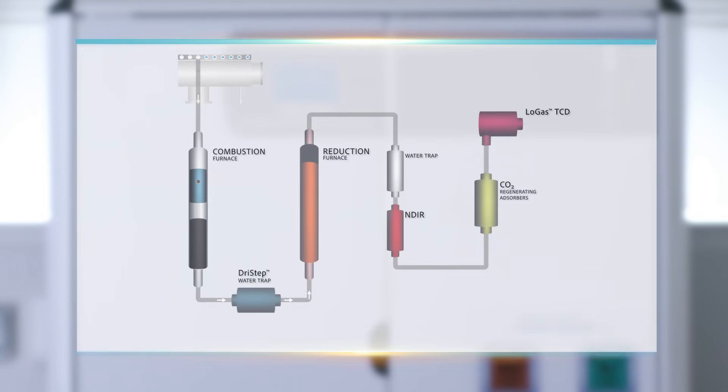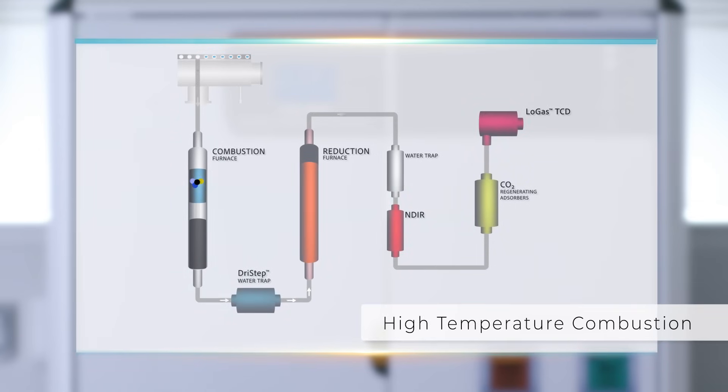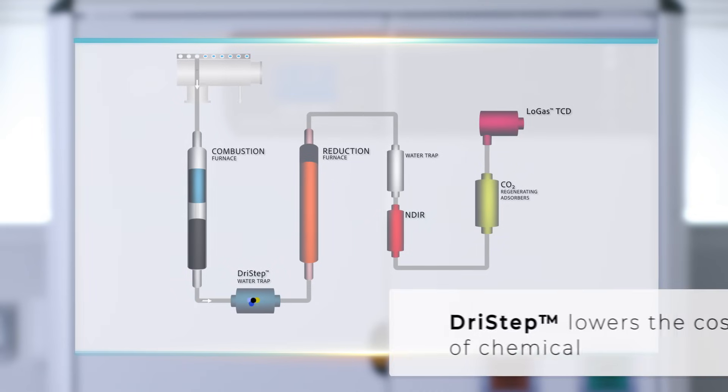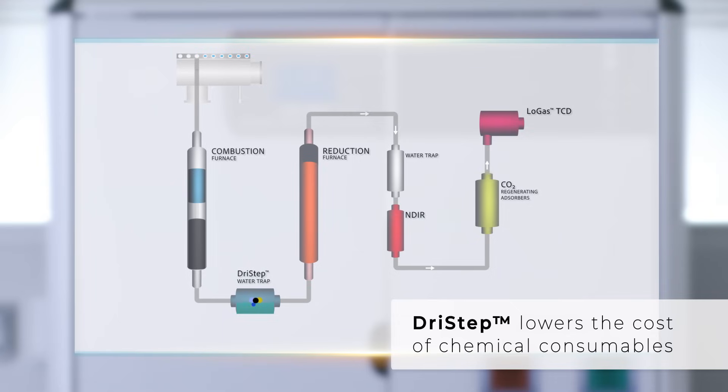The sample is purged with carrier and drops down into the combustion reactor where it is converted in its elemental compounds at a high temperature. The combustion gases are carried to the first water trap, the unique dry step, trapping 99% of water, reducing cost of chemical consumables.